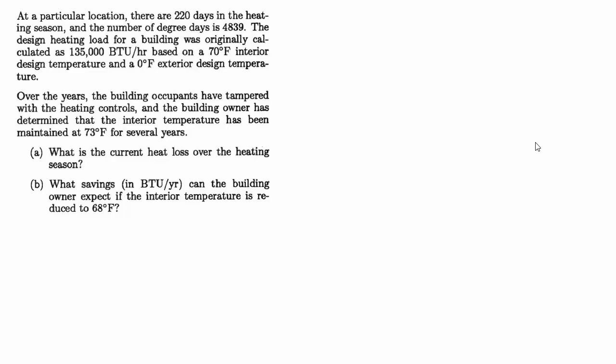Over the years, the building occupants have tampered with the heating controls and the building owner has determined that the interior temperature has been maintained at 73 degrees for several years. A, what is the current heat loss over the heating season? And B, what savings in BTUs per year can the building owner expect if the interior temperature is reduced to 68 degrees?